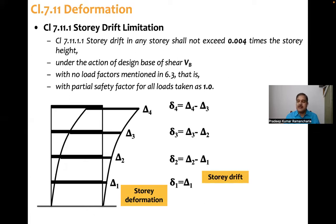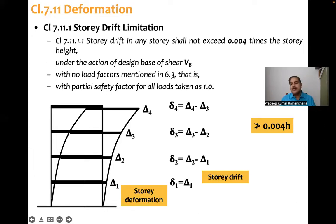Now how the drift is computed? Drift is delta 1, small delta 1 equals capital delta 1. But when it comes to small delta 2, that is the difference of deformation of second floor compared to first floor. That is the story drift. Like that, all floors drift will be computed.